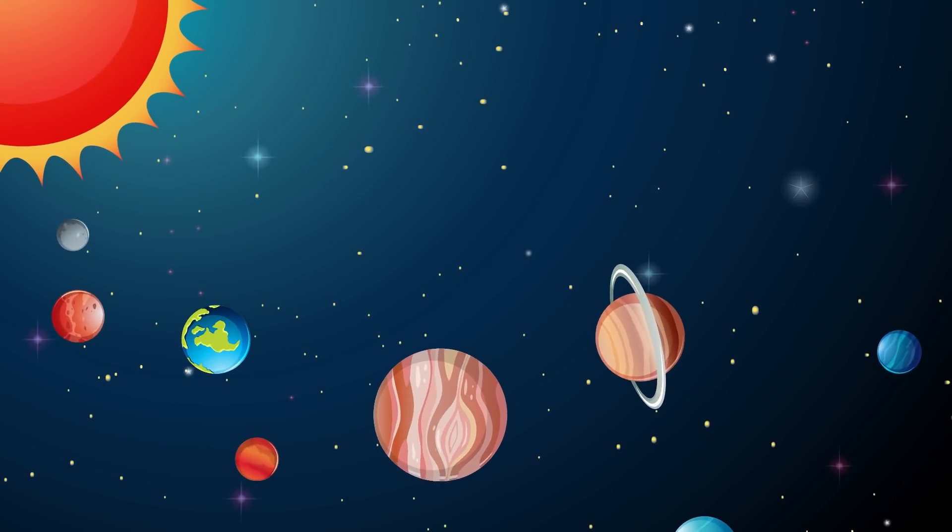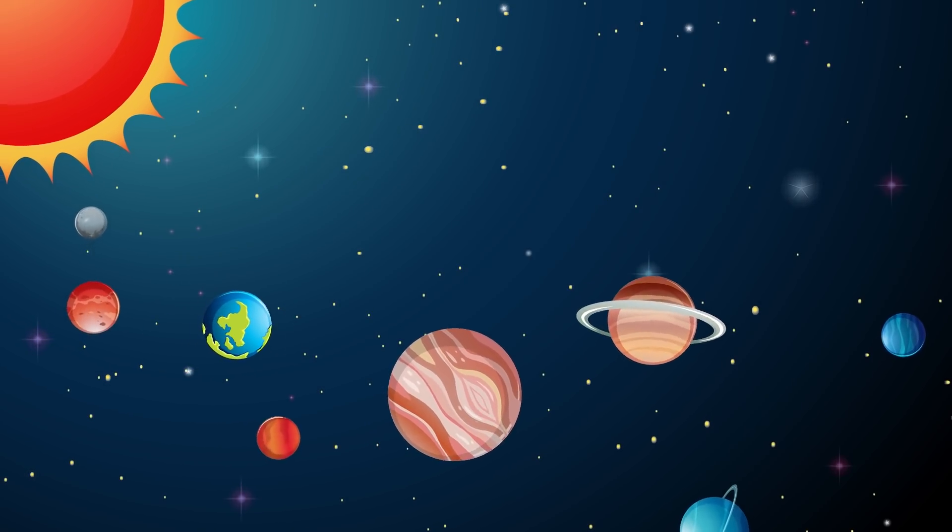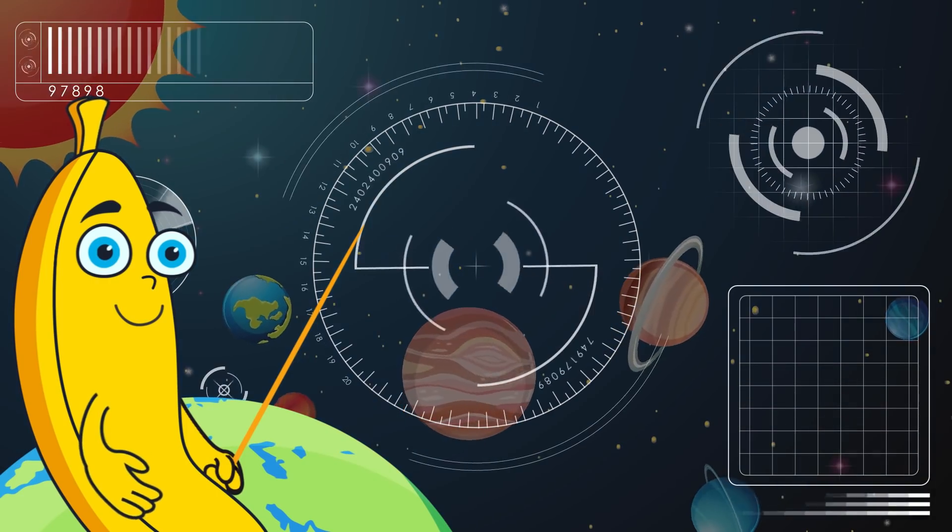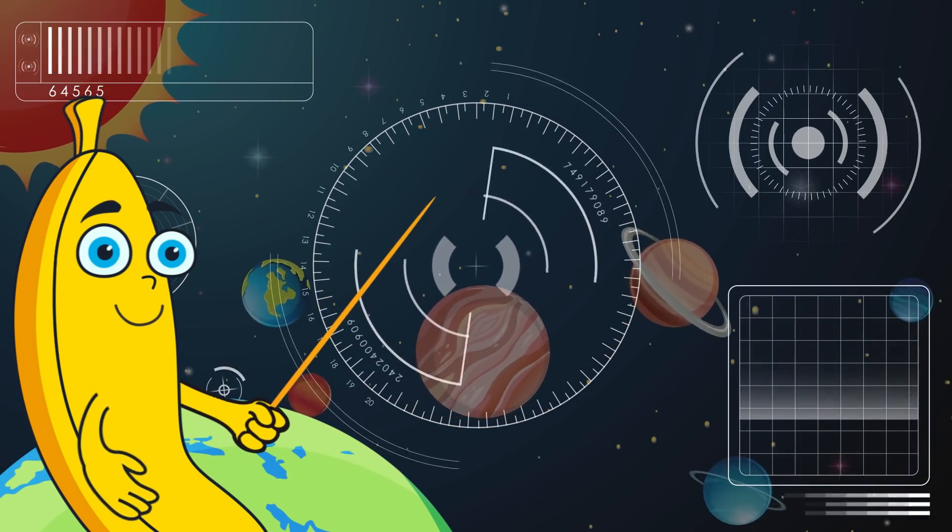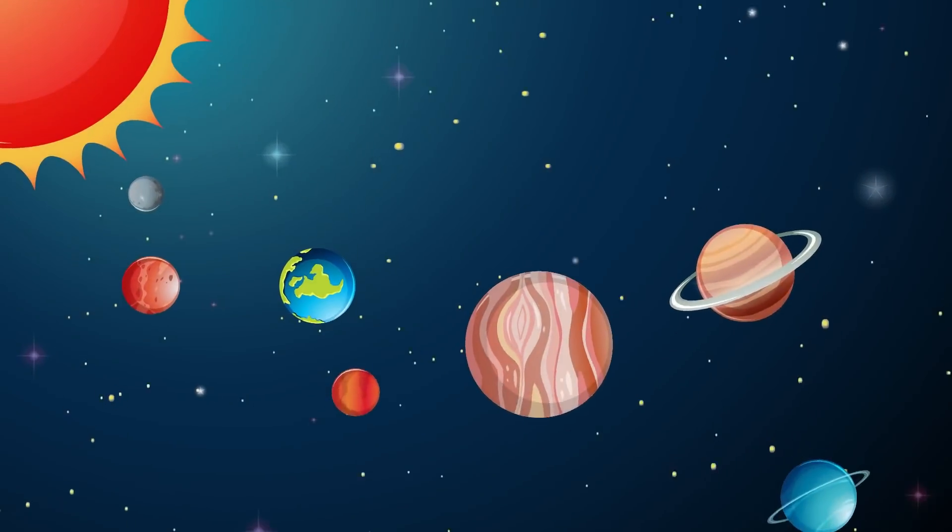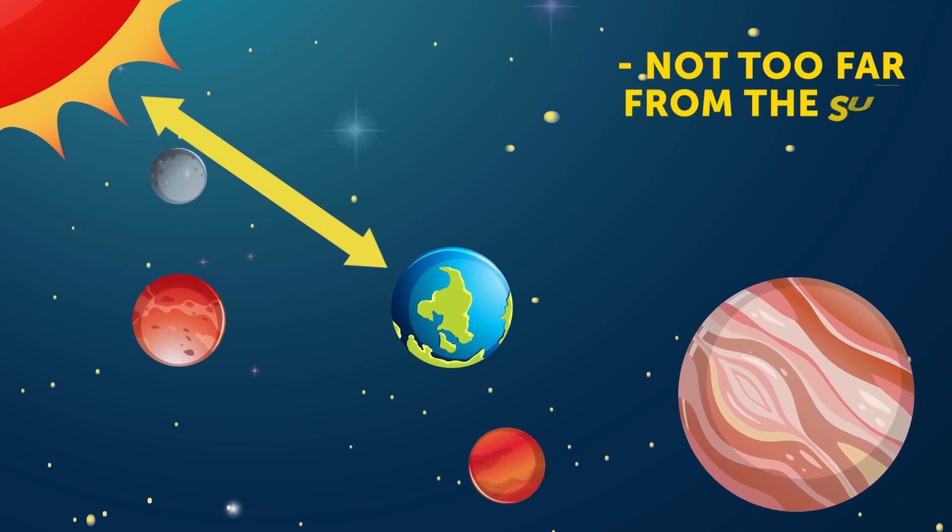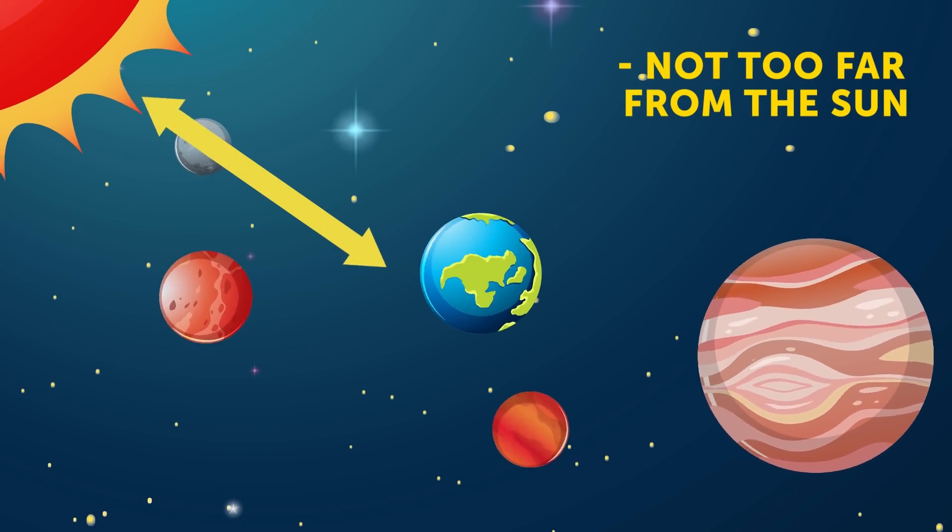Well, our planet is located in the best place for occurrence of life on it. The fact is that for the emergence of life, we need to observe several important conditions at once. So, the planet must be located not too far from the Sun. Otherwise, it would simply freeze.